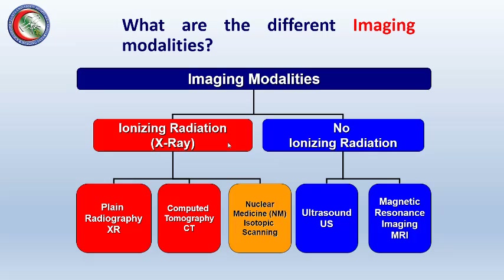Modalities using ionizing radiation include plain radiography, discovered by Röntgen, computed tomography machines, and nuclear medicine studies where the patient is injected with a radioactive isotope designed to target a certain body organ. The amount of radiation emitted from the patient is then imaged, quantified, or measured.